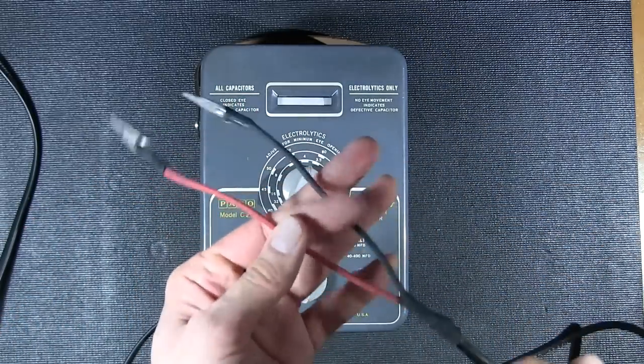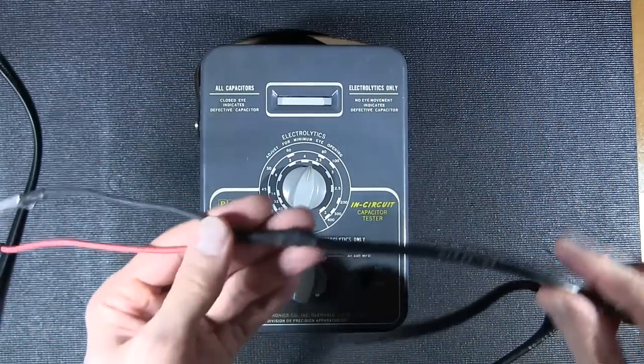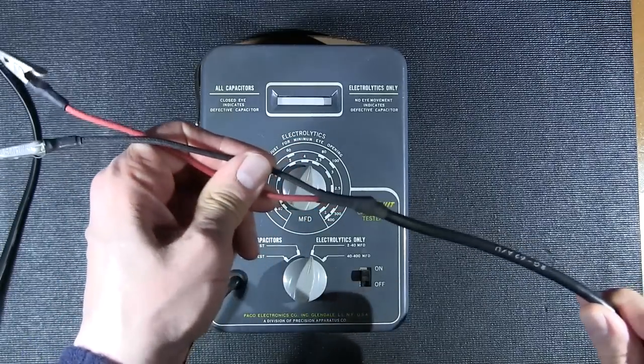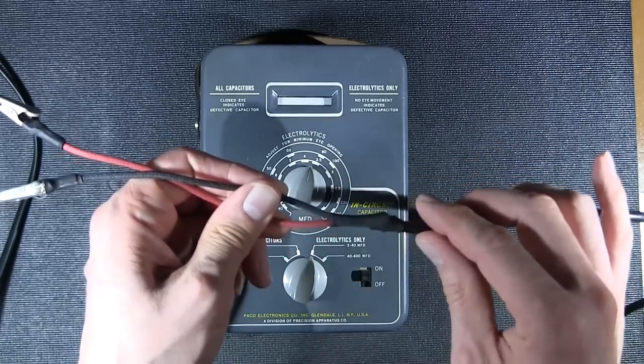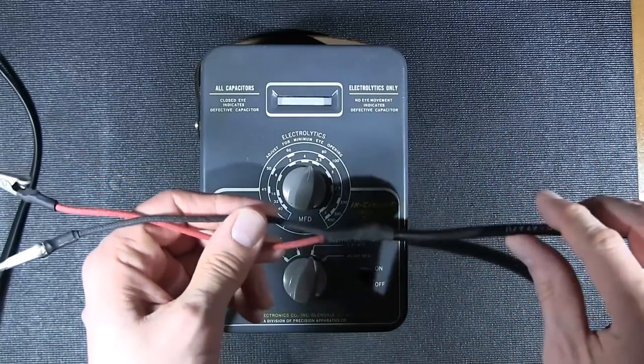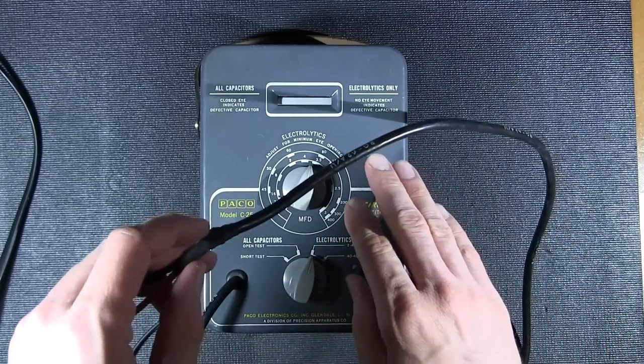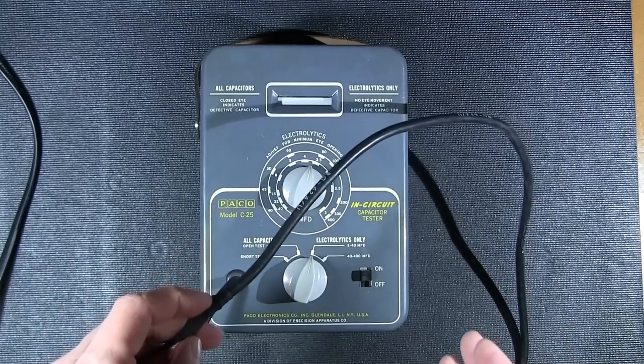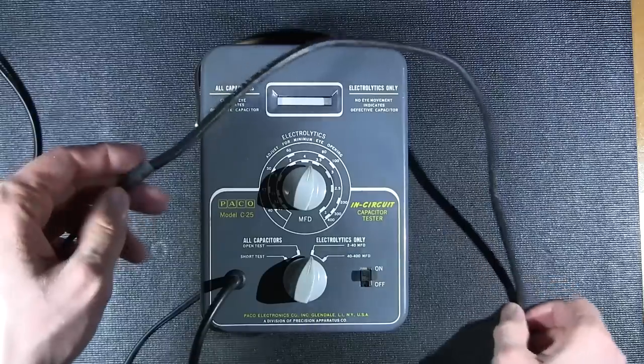The person that added these ends onto the coax obviously did not understand how this works because these are way too long and this is going to cause erroneous readings. These need to be very short little leads with little alligator clips on the ends in order for this thing to work correctly and I plan on doing a restoration on this little capacitor tester in the future. If you're interested in seeing that leave your comments below.